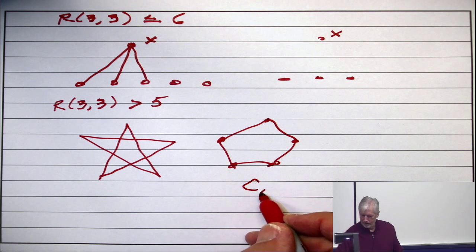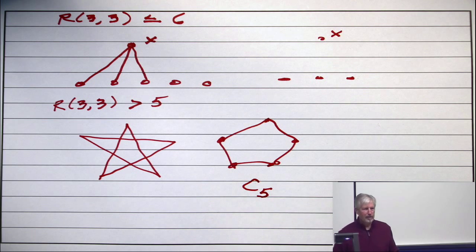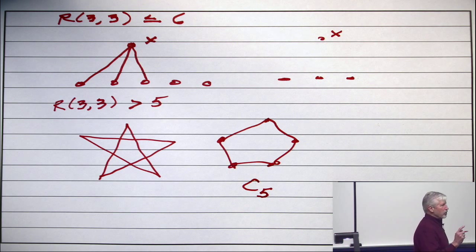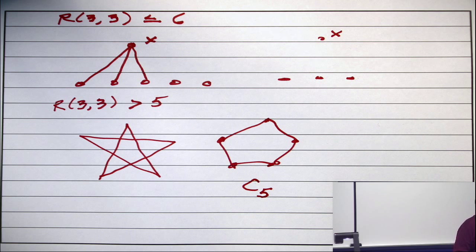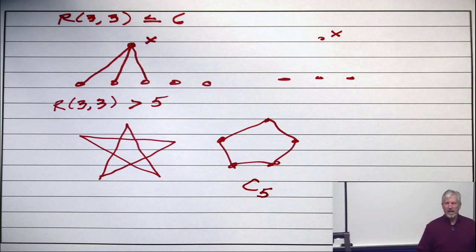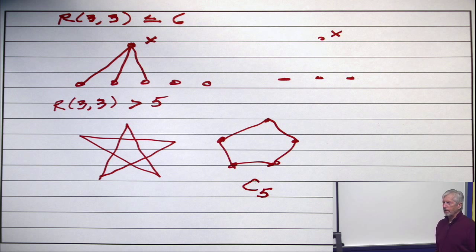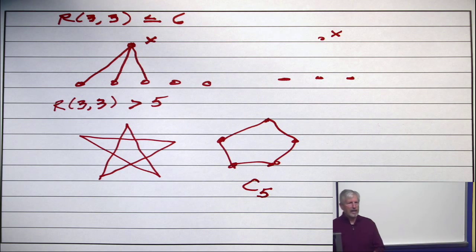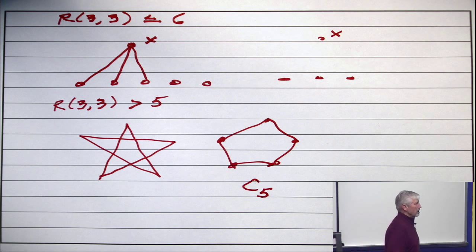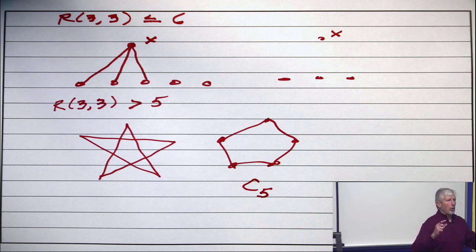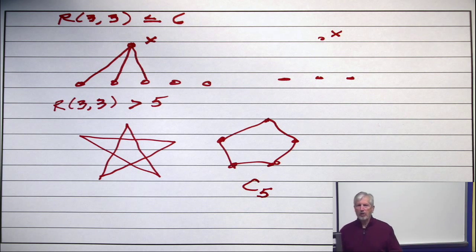Okay. So, in the C5, do you have any triangles? No. Do you have any independent sets of size 3? No. So, there is a graph on 5 vertices which has no K3s and no I3s. But, once you get to 6, there will always be a K3 or an I3. Those two things together show that the Ramsey number R(3,3) is exactly 6.